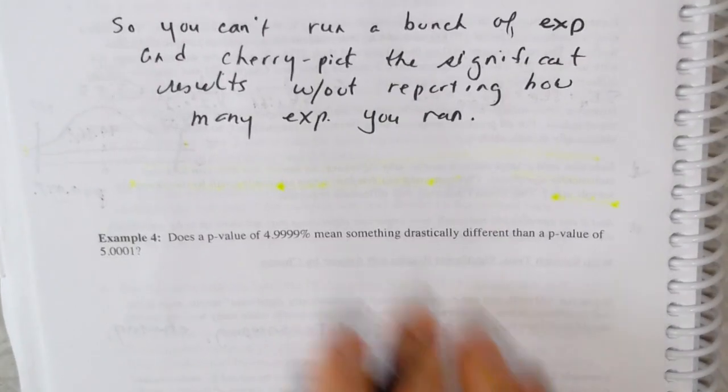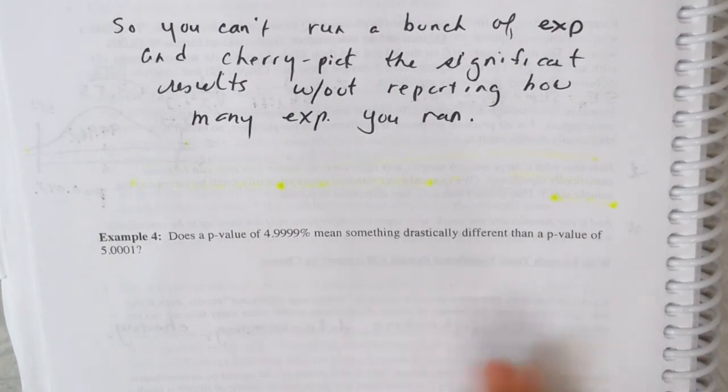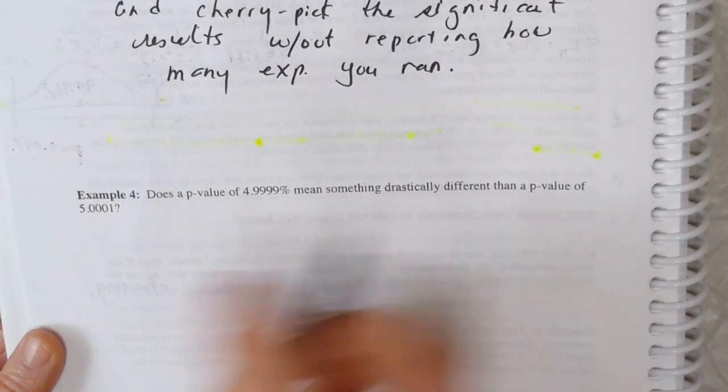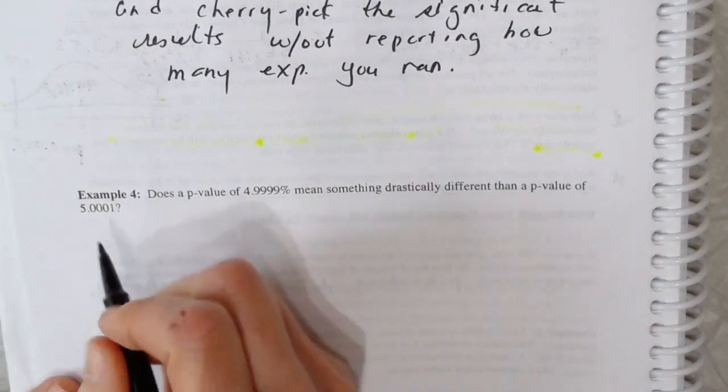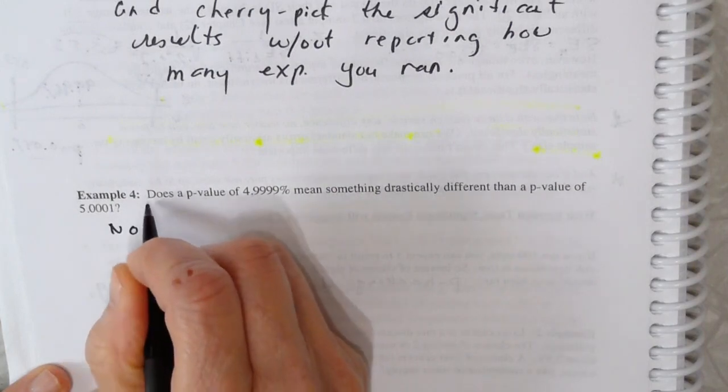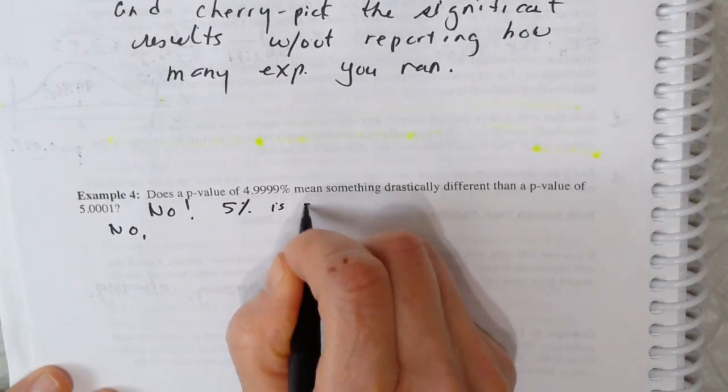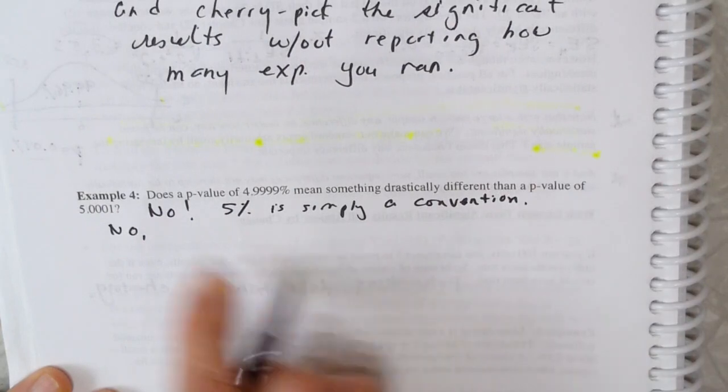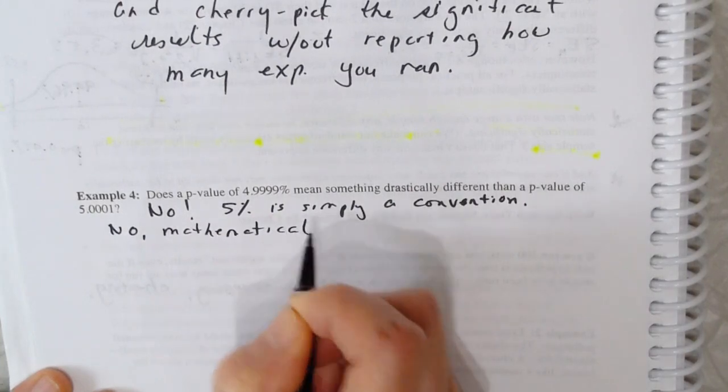And the last thing I want you to remember is that there's nothing sacred or special about the 5% cutoff. It's just a convention. Does a p-value of 4.999 mean anything different than a p-value of 5.001? Not really. It's not like there's no mathematical justification for the 5% cutoff. No, this 5% cutoff is simply a convention. These are basically the same result. And there's no mathematical justification for it. Don't think that there's something special about 5%.